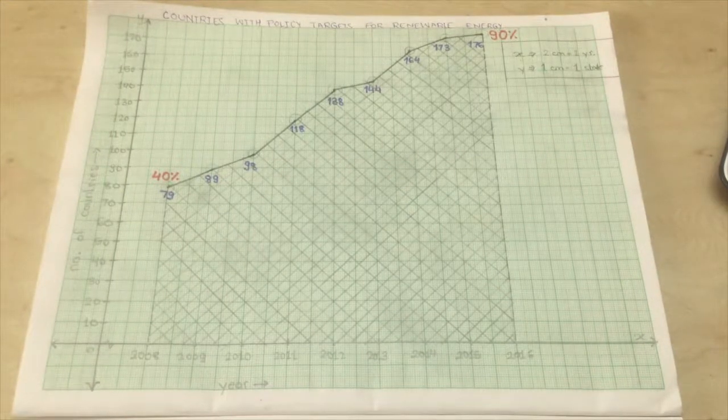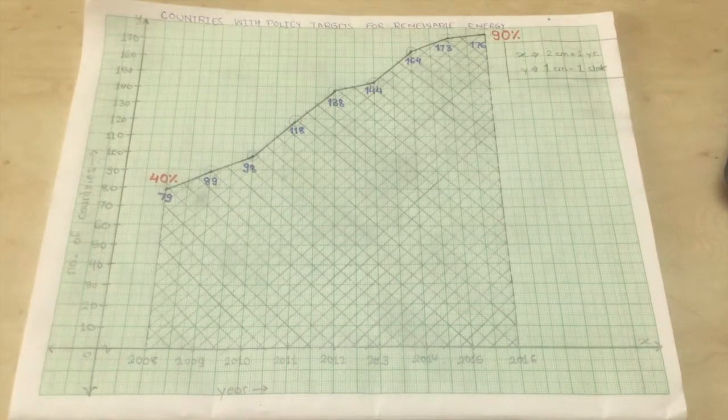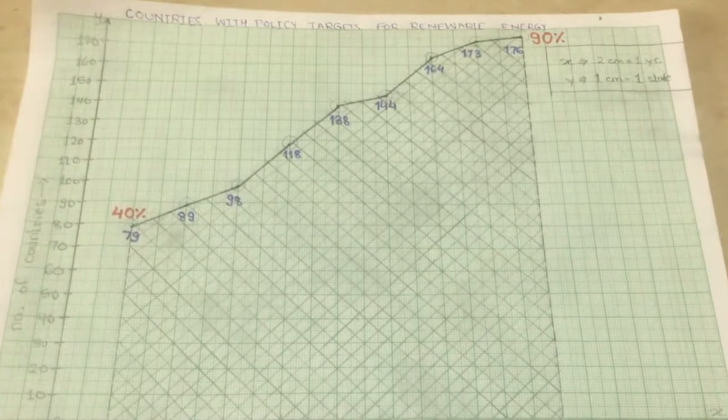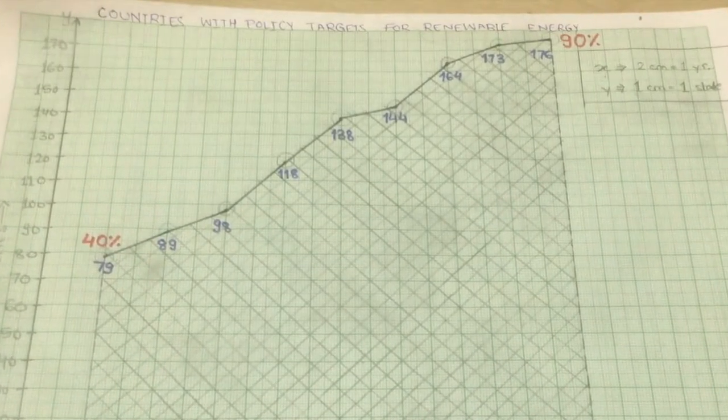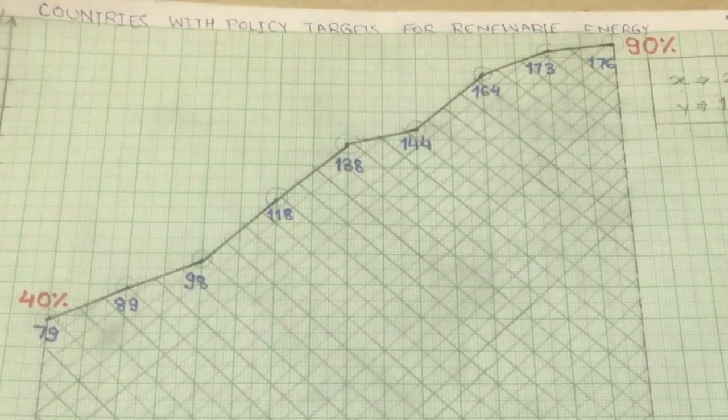Take a look at one of the most positive graphs you can see right now. This is a graph of the number of countries that have set a policy target, a hardcore policy target, to achieve usage or production of renewable energy.